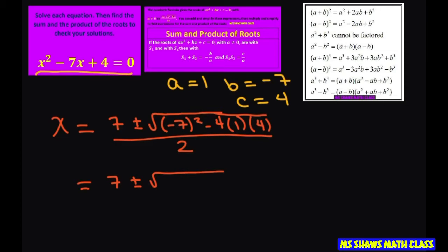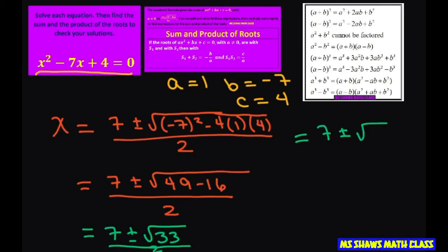minus square root of 49 minus 16, divided by 2, which equals 7 plus or minus square root of 33, divided by 2. Let me write it here: (7 ± √33) / 2. Those